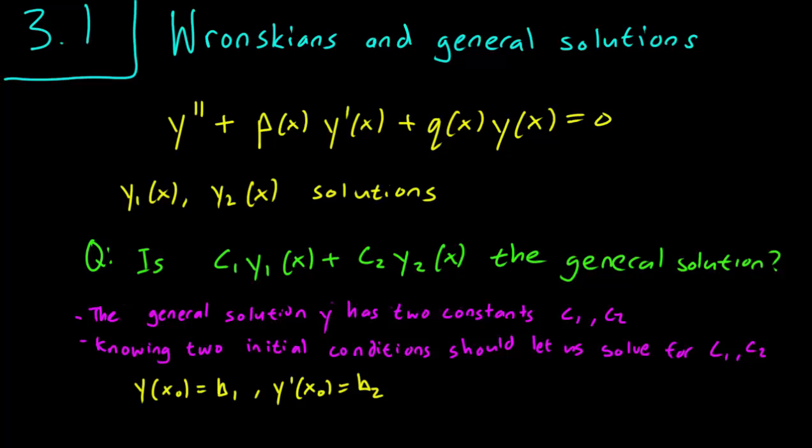So this is a second-order equation. We expect there to be two initial conditions, b1 and b2. So we say y(x0) is b1, and y'(x0) is b2, where x0 is the initial time. And if we have those two equations, we should be able to solve for c1 and c2.